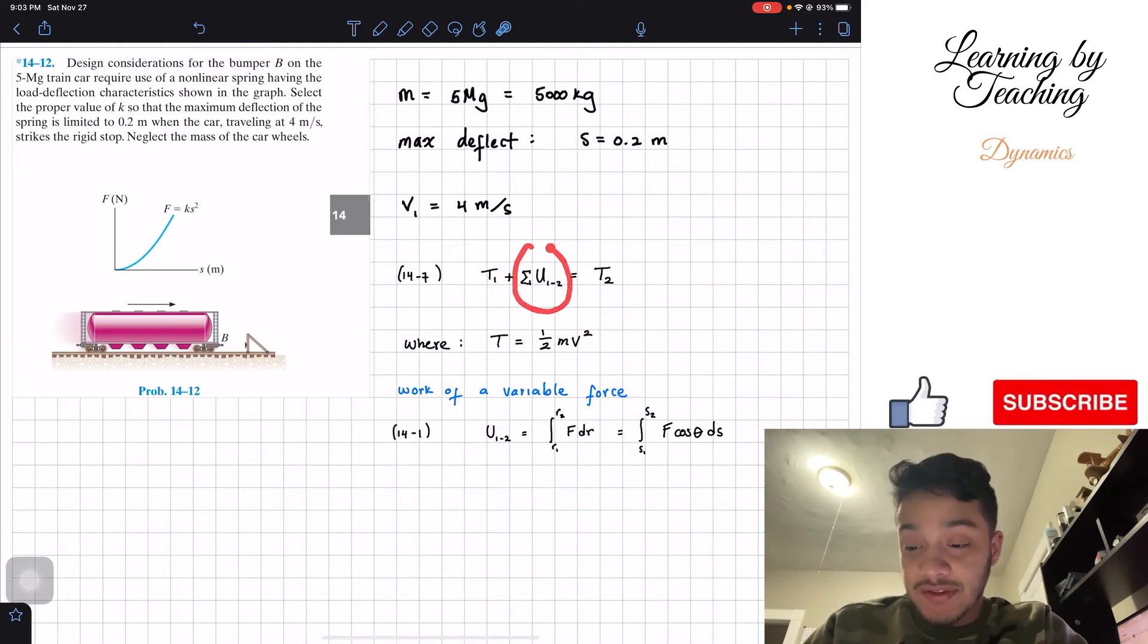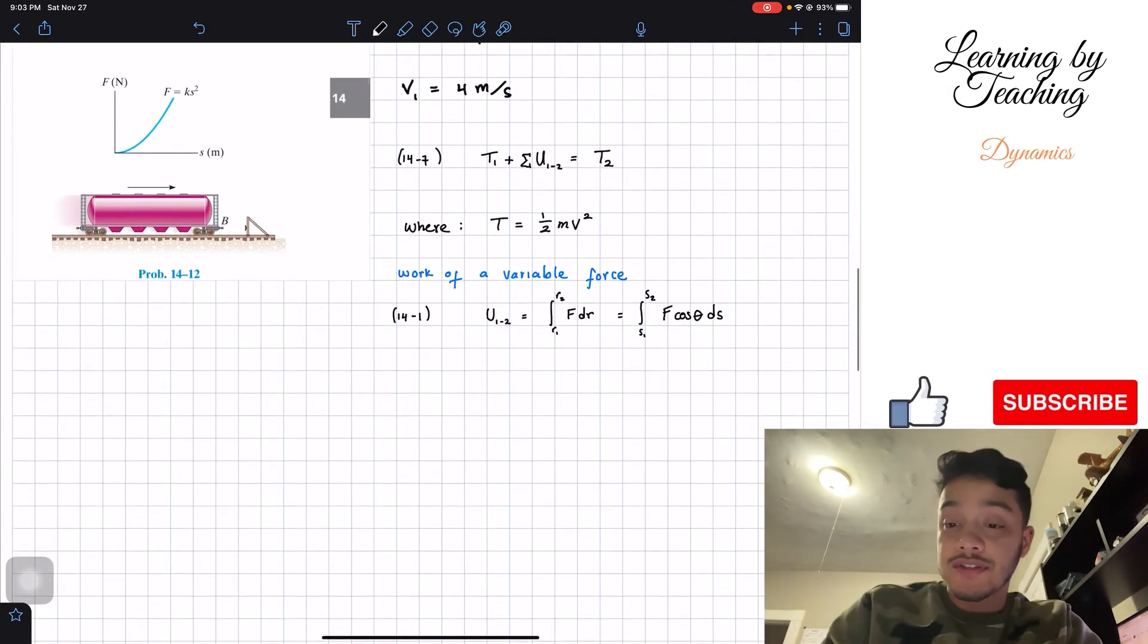Let's take a look that our force is k times s, meaning that it's variable, it depends with respect to the deflection. So we're going to utilize that our work is going to be equal to the integral of our force with respect to the position.